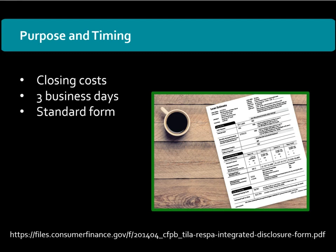When there is a change of circumstance after the loan estimate has been provided, the lender can revise the loan estimate within three business days. A revised loan estimate generally can be provided no later than seven business days before consummation. The form uses clear language and is designed to help the borrower understand the terms of the mortgage loan.